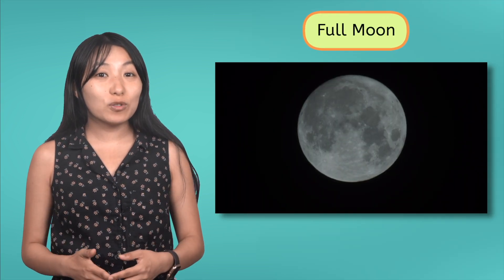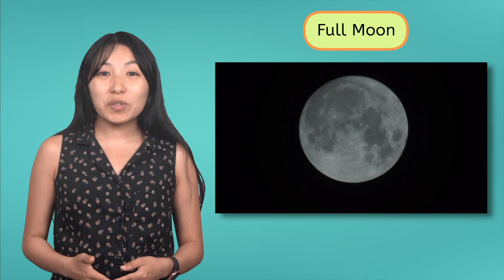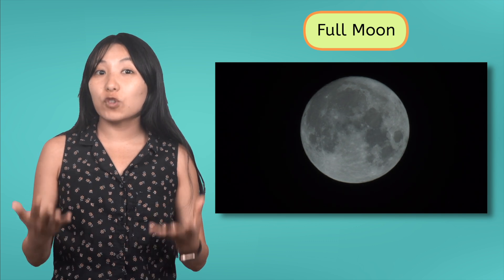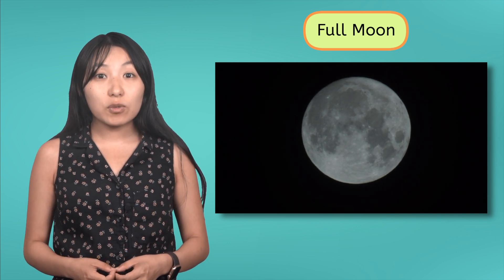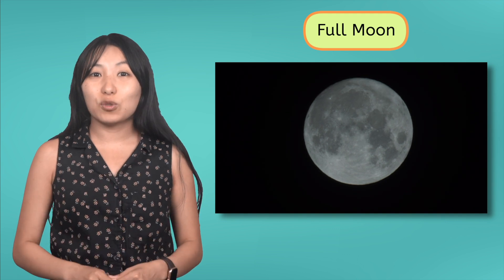If you guessed the Full Moon, you're right. Lunar eclipses only happen during the Full Moon phase because that's when Earth can cast its shadow directly onto the Moon.